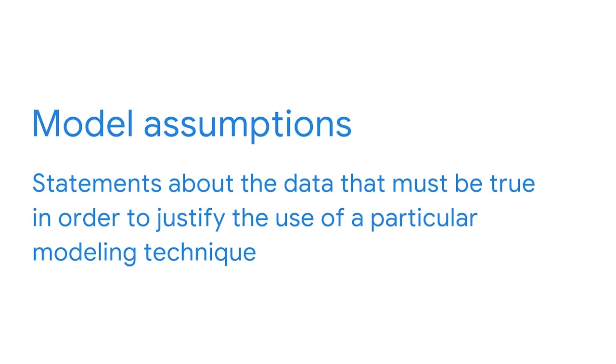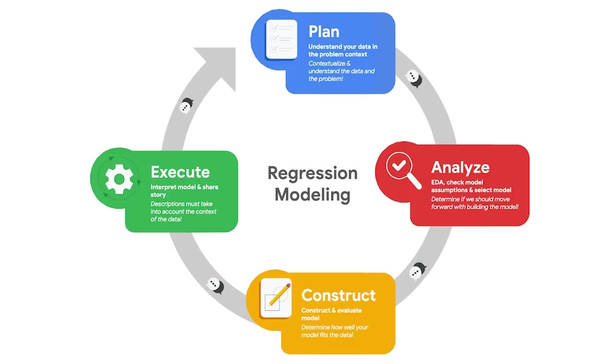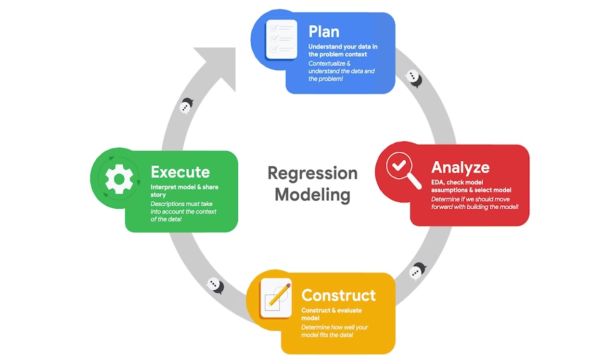Let's begin with the analyze stage of the PACE framework. The first task in simple linear regression analysis is checking the assumptions of the model. In addition to the technical needs of the model, you'll need to consider the business context of the problem you're working on. This will come in the plan stage. Model assumptions are statements about the data that must be true in order to justify the use of a particular modeling technique. Ensuring that we're using the right model given the data that we have allows us to be confident in the results those models produce.